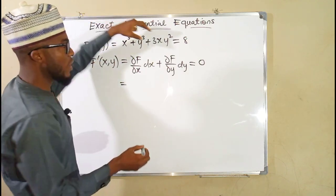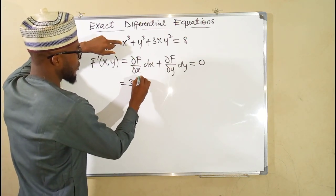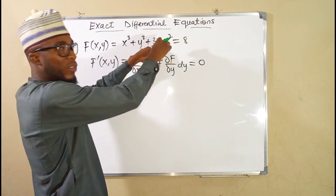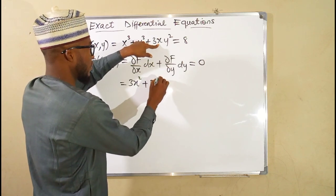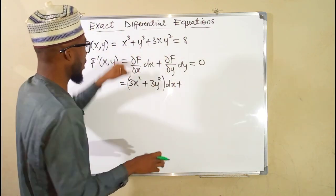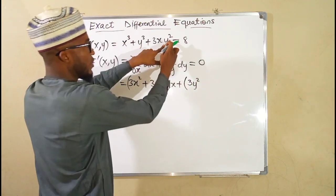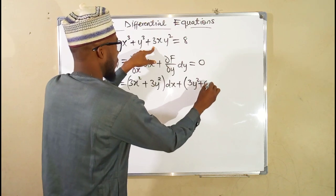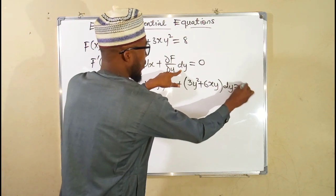Now substituting: differentiating with respect to x while treating y as constant gives 3x squared plus 3y squared for the dx term. Then differentiating with respect to y — y squared differentiated gives 2y, multiplied by 3x gives 6xy — so we get 6xy dy. The whole expression equals zero.